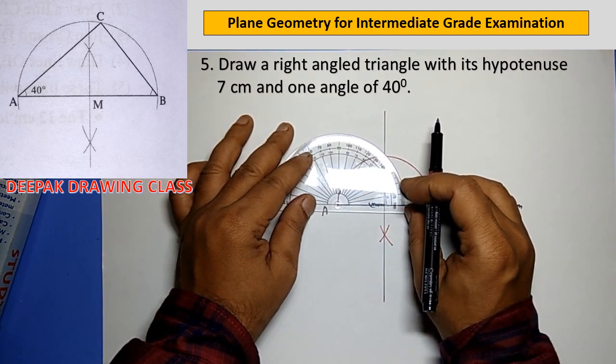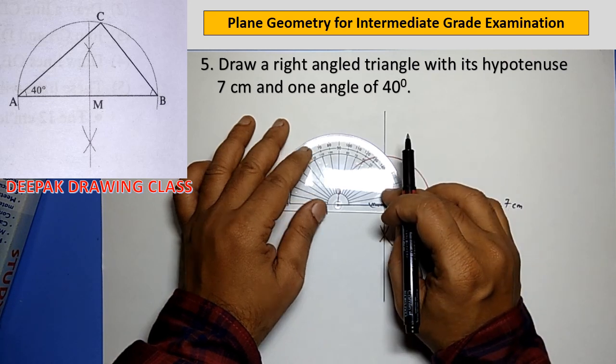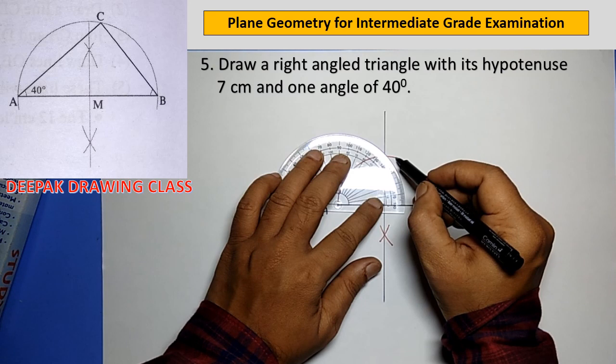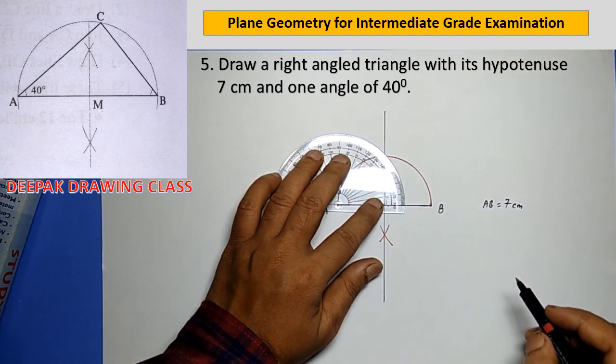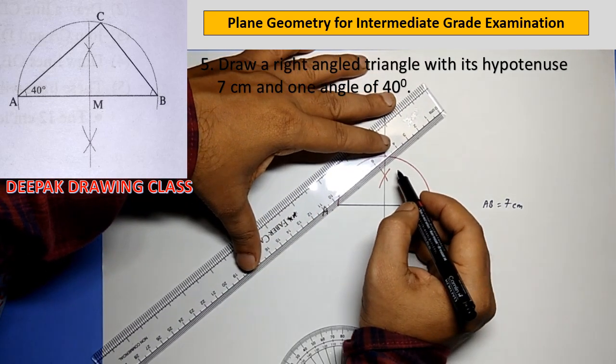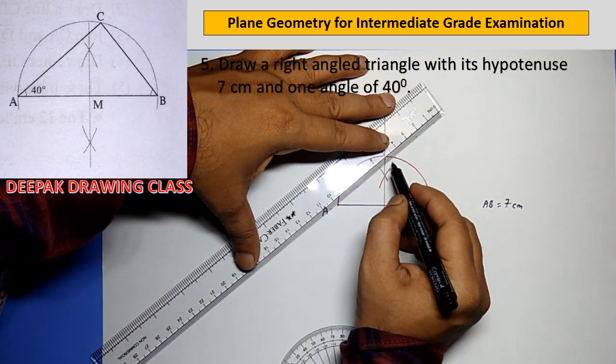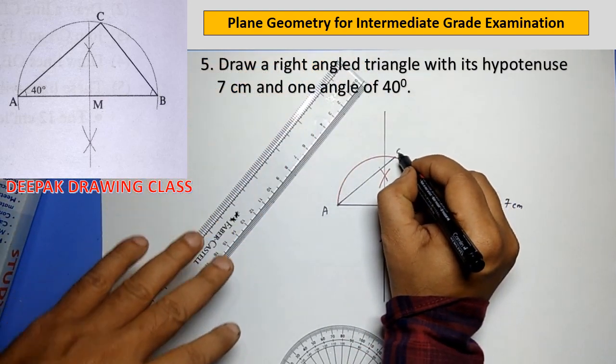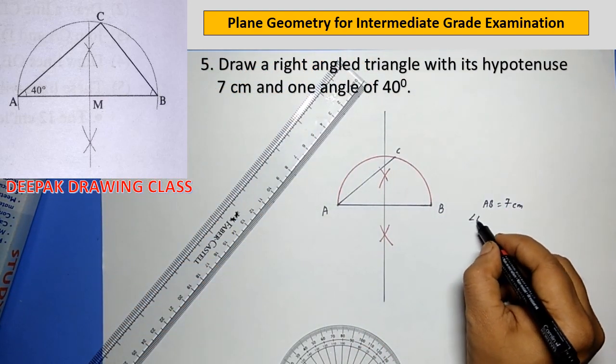With the help of a protractor, at point A draw a line making an angle of 40 degrees with line AB and meeting the semicircle at point C. Lastly, join CB.